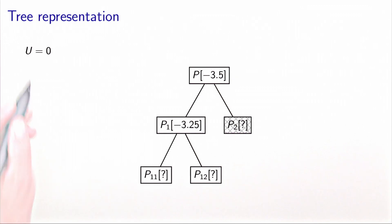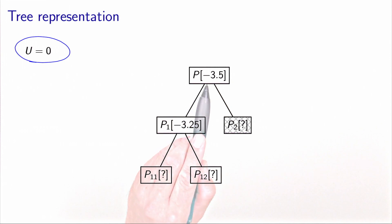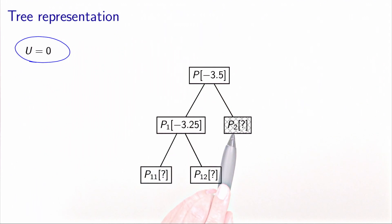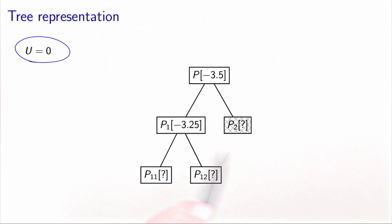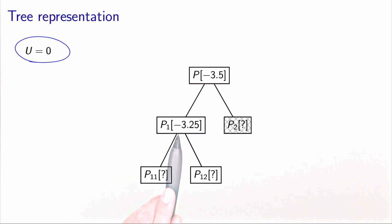In the tree, the upper bound is still at 0. We have a lower bound on P of minus 3.5, and P was divided into P1 and P2, with P2 infeasible and removed. We then calculated a lower bound on P1 of minus 3.25, and used the optimal solution of the relaxation to divide P1 into P11 and P12.